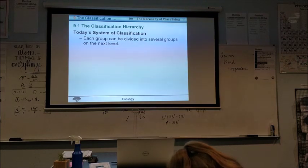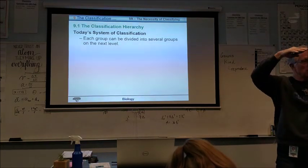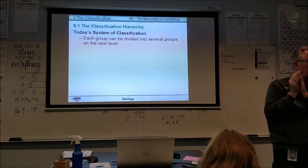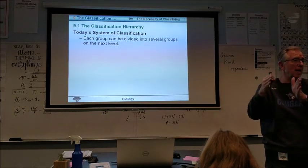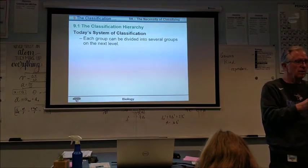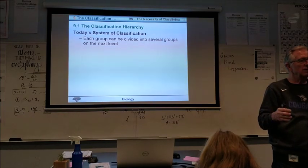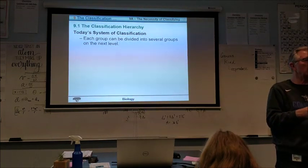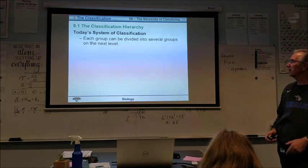So, each group can be divided into several groups on the next level. At the top, you have kingdom, well, actually, we have domain that can be broken into kingdoms. Then the kingdom can be broken into smaller groups of phyla. So, king Philip, king, class, and phyla can be broken up into different classes. And then each class can be broken up into smaller groups that we call families. And then each family can be broken up into smaller groups called genus or genera. And then each genera can be broken up into smaller groups called species. So, we can divide it many ways and have lots of different detail.